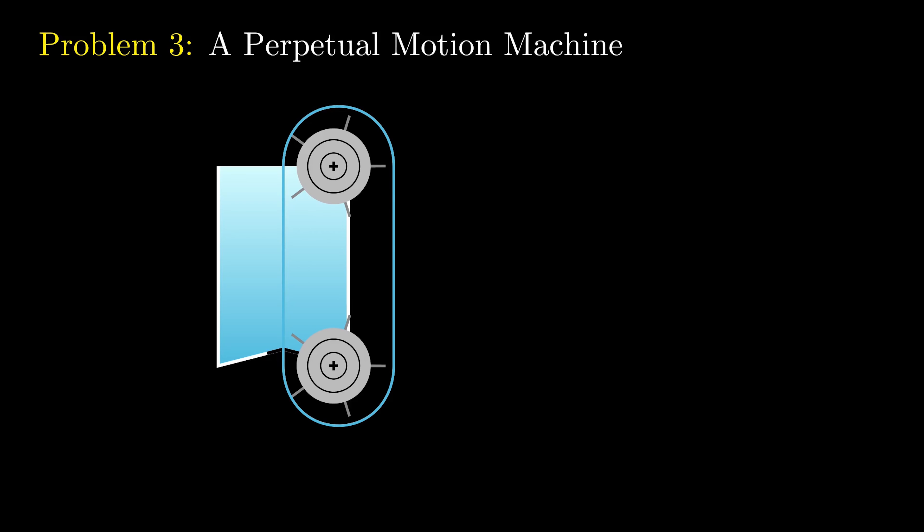Lastly, for our final problem, we have a perpetual motion machine. Consider the following. We have a tub of water with two gears or pulleys on the side. Then on the strings going around it, we attach some ping pong balls.